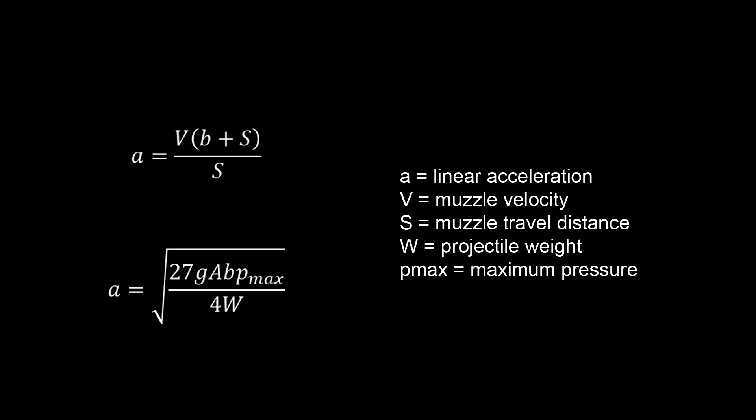Now we can solve for a. It is extremely likely that a gun designer will already know the velocity at the muzzle denoted by a capital v, the bullet travel at the muzzle denoted by a capital s, the weight of the projectile and the linear acceleration in feet per second per second and maximum pressure, allowing us to solve for a giving us these two equations.